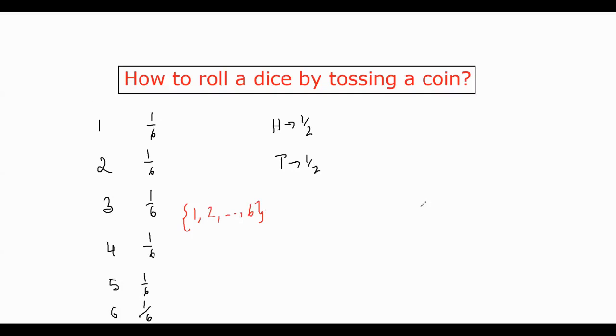So what we will do is that we will produce at least six outcomes with heads and tails. How can we do that? By tossing multiple number of times. So to need at least six, we need three tosses. So let's do three tosses. So out of these three tosses, what are the outcomes possible? Let's count it.